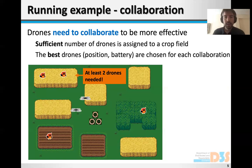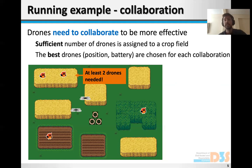Another aspect of collaboration has to do with optimality. Collaborations can be formed in different ways, but we would like to form collaboration in the most efficient way. One way to look at it is that when a field is in danger, we will select the drones that can be dispatched quickly to the field — so the ones that are basically closer to the field.